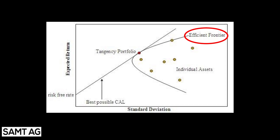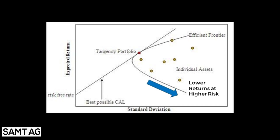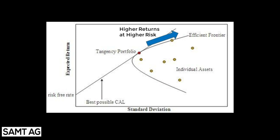With risk on the x-axis and return on the y-axis, this hyperbola shows all outcomes for various portfolio combinations of risky assets. The straight line is the capital allocation line, which represents a portfolio of all risky assets and risk-free assets like government bonds. The tangency portfolio is the point where the portfolio of risky assets meets the combination of risky and risk-free assets, and this portfolio maximizes return for a given level of risk. As you move towards the right along the lower part of the hyperbola, you get lower returns at higher risk; along the upper part, you get higher returns at higher risk.